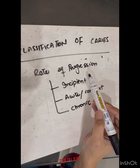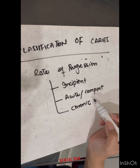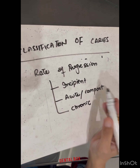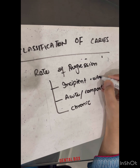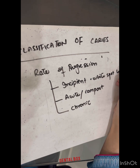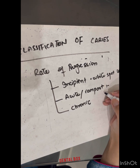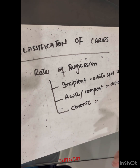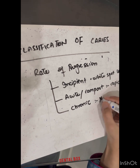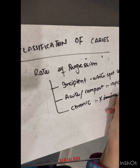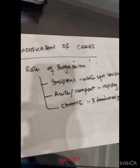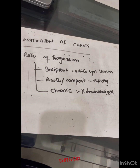The classification based on rate of progression divides caries into incipient, acute or rampant, and chronic caries. Incipient caries involves the white spot lesion. Acute and rampant caries is rapidly progressing. In chronic caries, the demineralization process has ceased — it is a white spot lesion where demineralization has stopped.